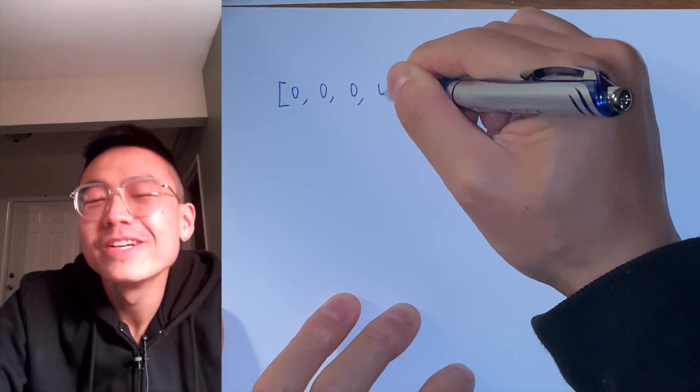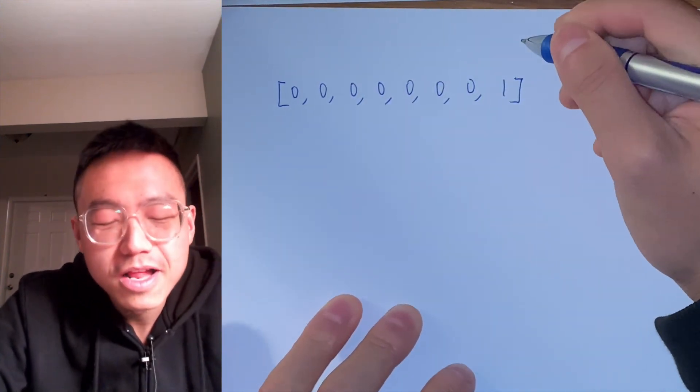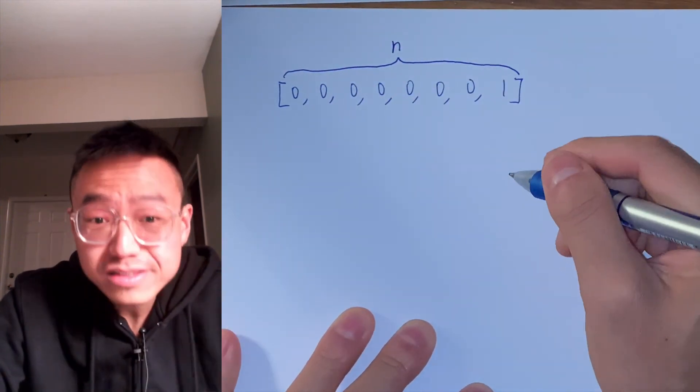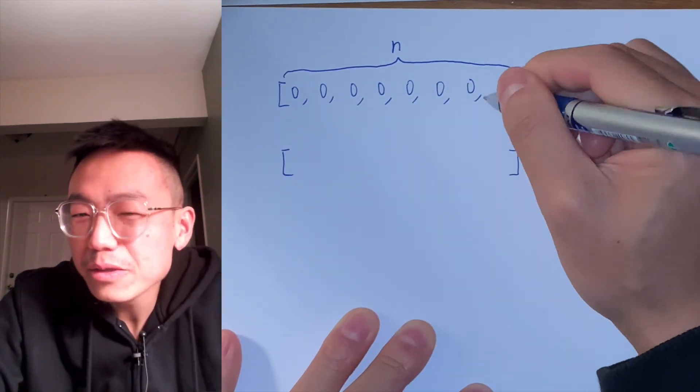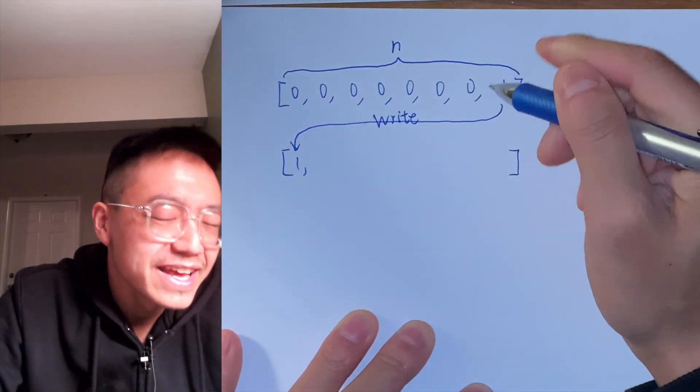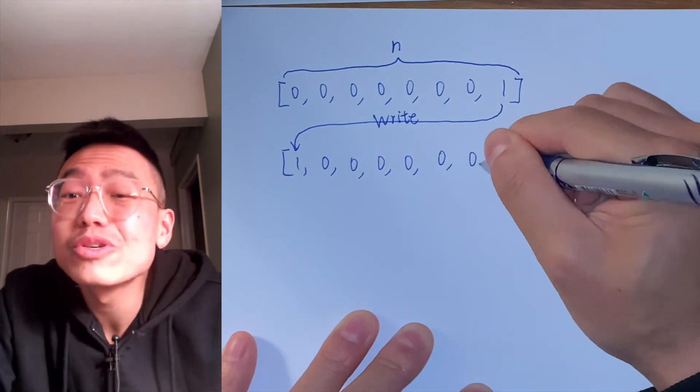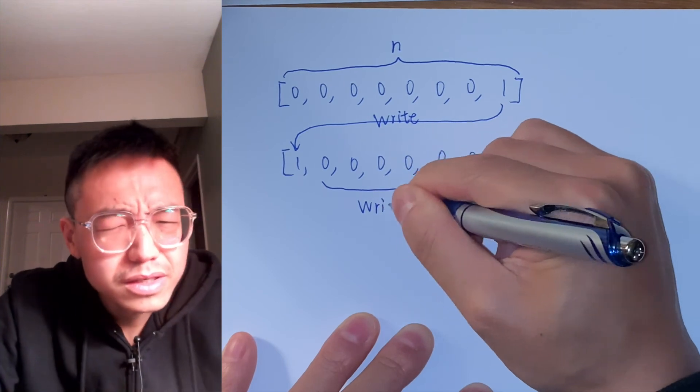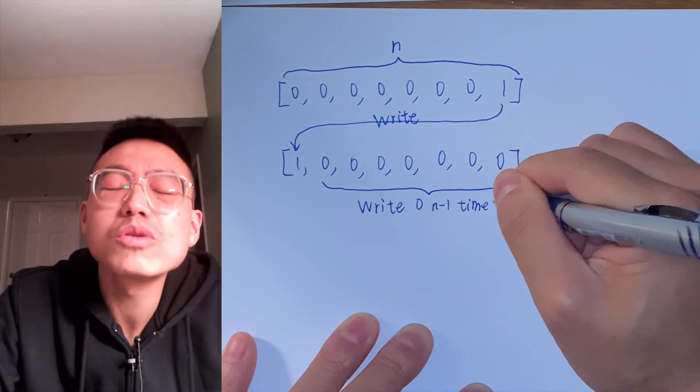For the previous approach, its total number of operations is suboptimal. For example, if the array has all leading zeros except the last one is non-zero, by using the previous approach, it writes zeros n minus one times, which is not necessary. We could have instead written just once. How could we? By only fixing the non-zero elements.